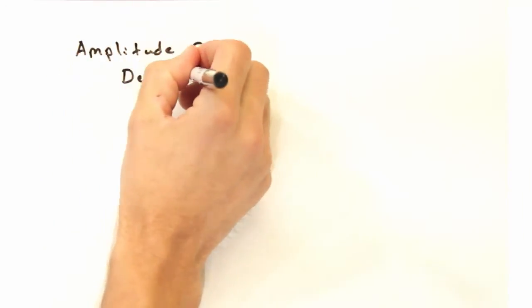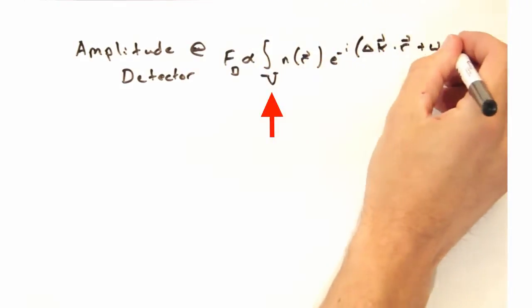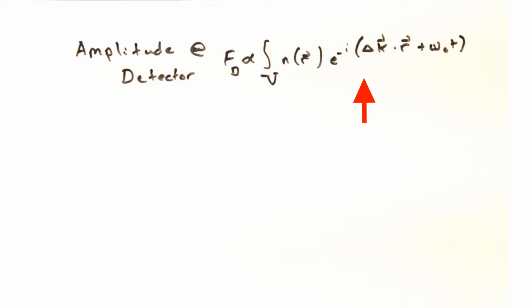In this case, the amplitude of the detector was given by an integral across the sample volume that was illuminated, the scattering density n, and this i to the k dot r plus omega t term.